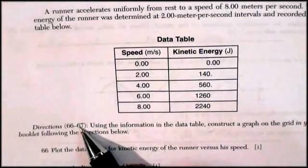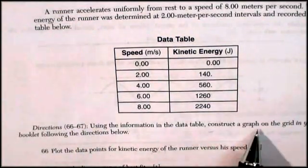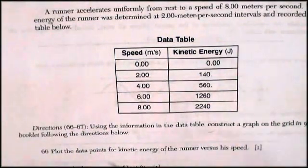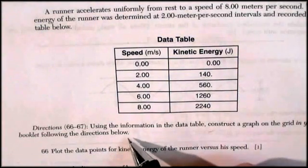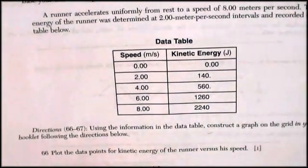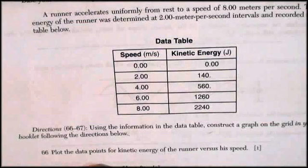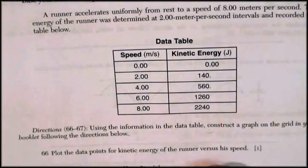Directions 66 to 67: using the information in the data table, construct a graph on the grid in your answer booklet following the directions below. For a point, they want you to plot the data points for kinetic energy of the runner versus his speed.